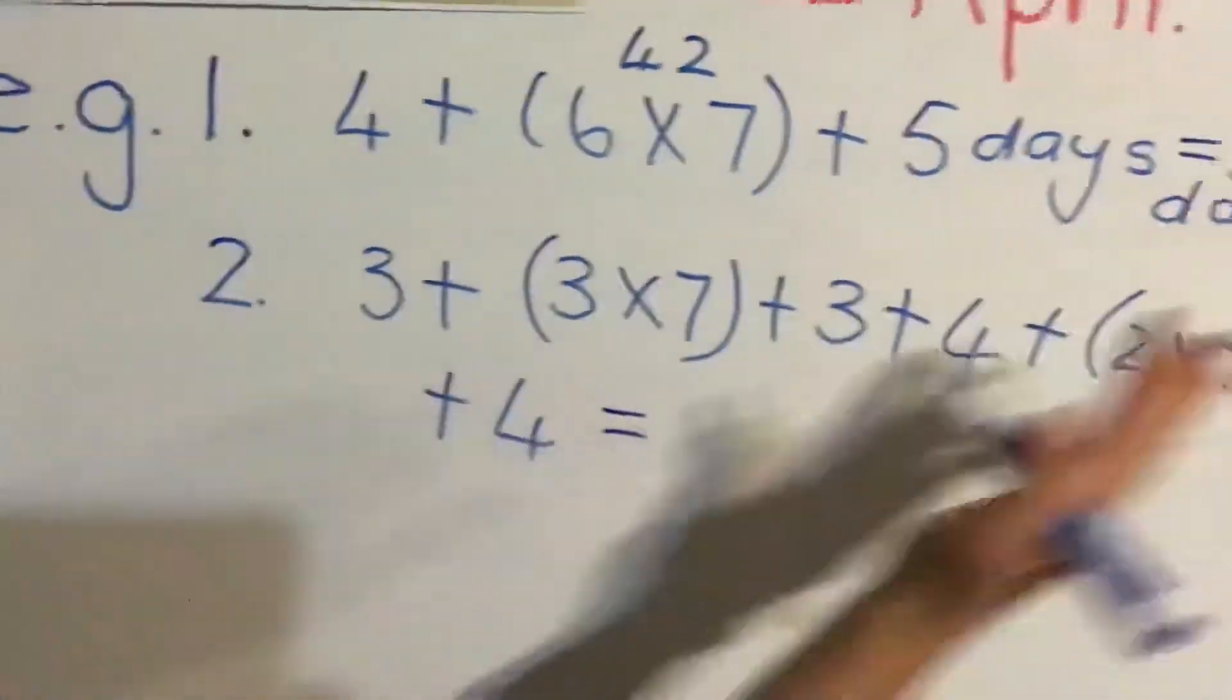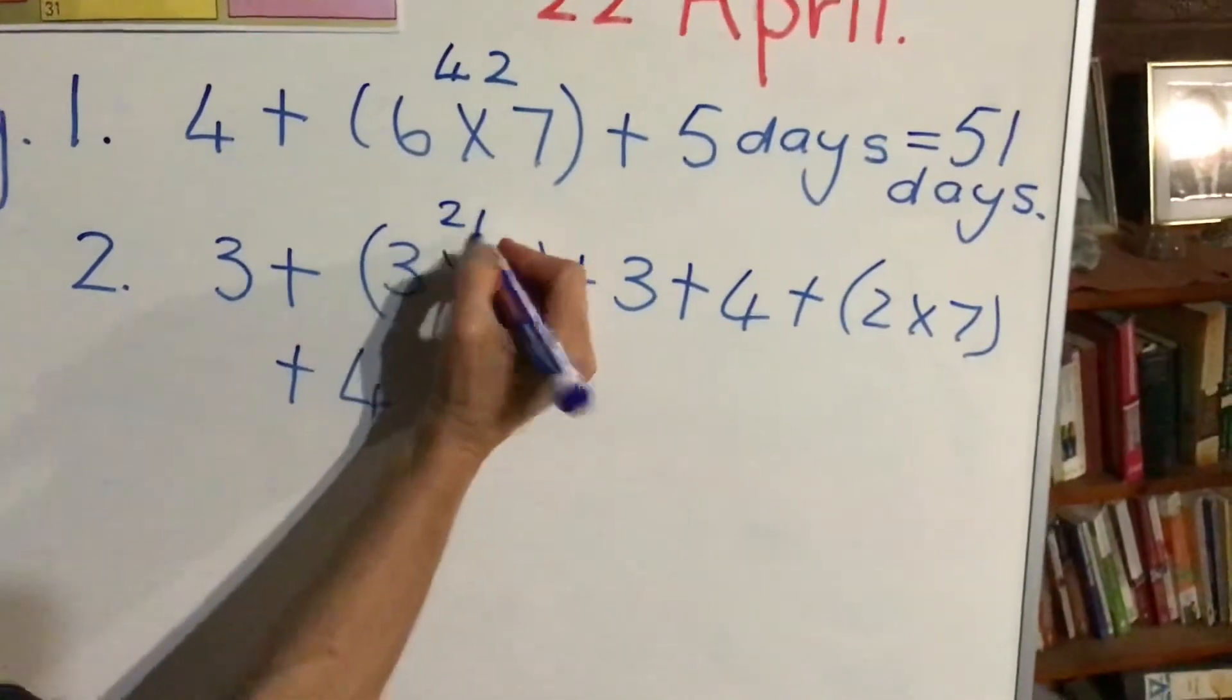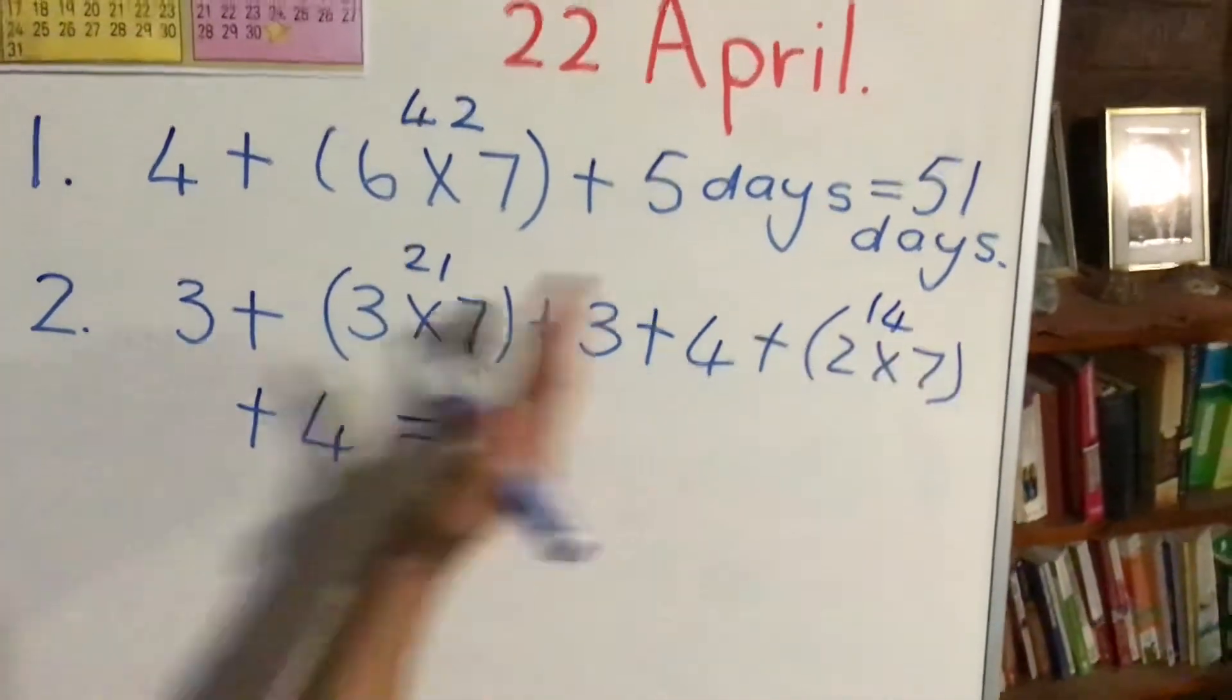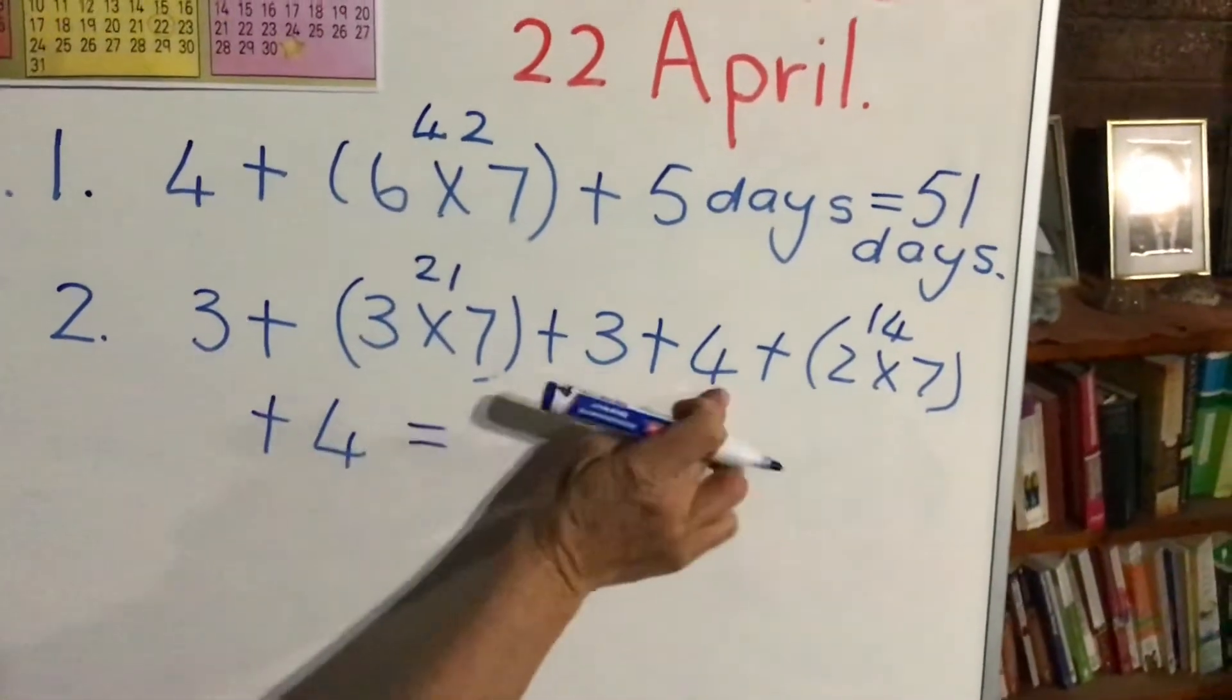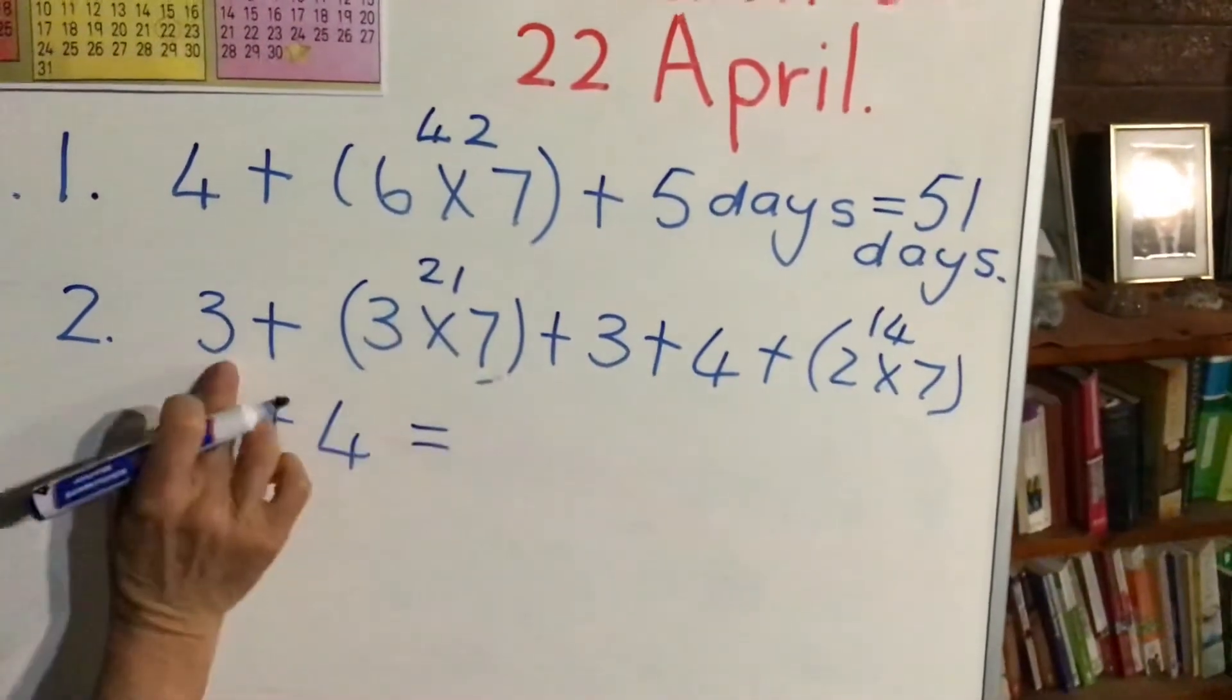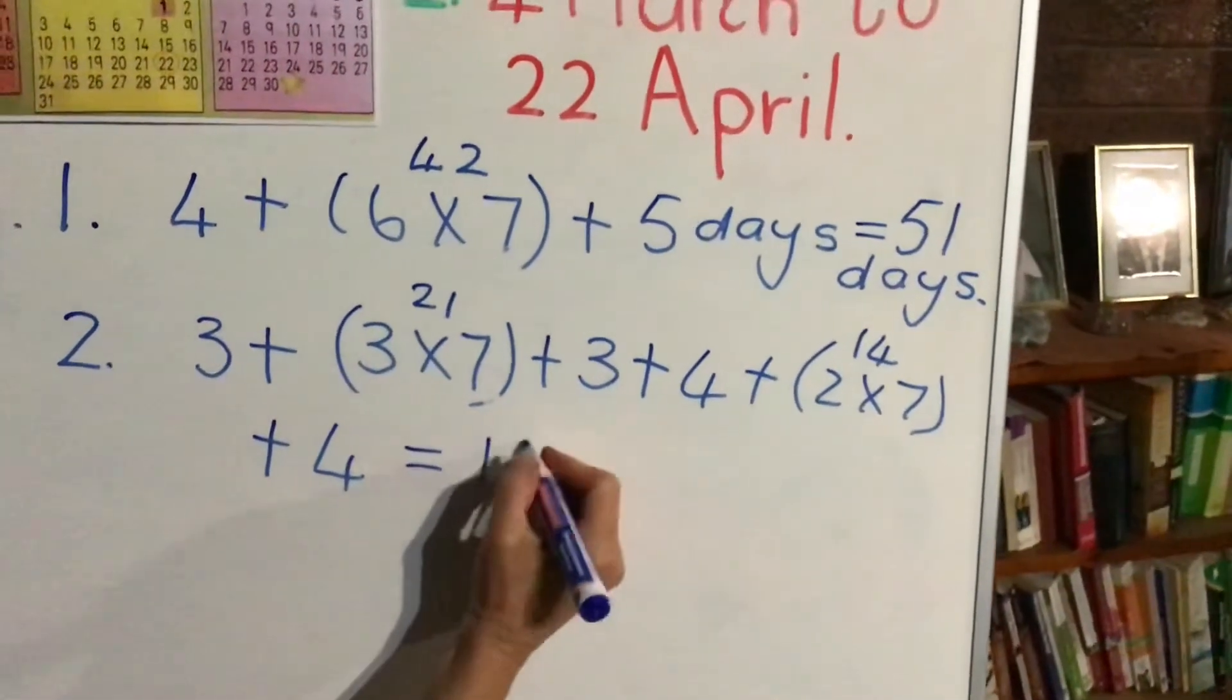Now we can work this out. Our number sentence, brackets we will do first. 3 times 7 is 21. 2 times 7 is 14. Now we just need to do a little sum here. Let's add up all these odd numbers: 3 + 3 is 6, plus 4 is 10, plus 4 is 14. So let's write down 14 + 21 + 14.